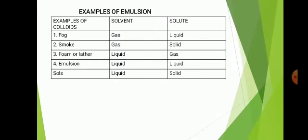Looking at examples of colloids: for fog, the solvent is gas and the solute is liquid. For smoke, the solvent is gas and the solute is solid. For foams or lather, the solvent is liquid while the solute is gas. For emulsion, the solvent is liquid and the solute is liquid.